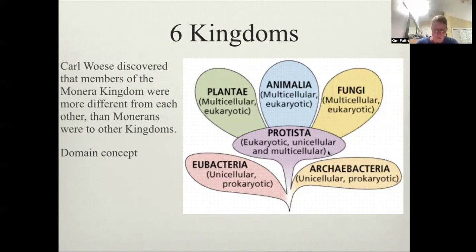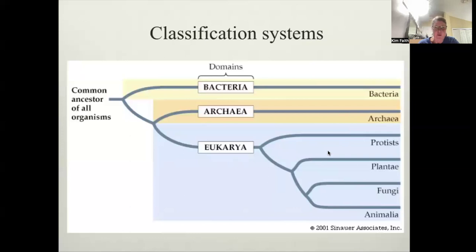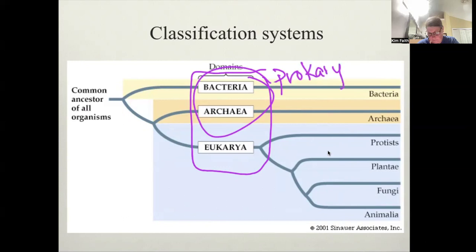And then we decided protista is still a hot mess. So we now have this domain concept. You can see here where we have bacteria, archaea, and eukaryotes. So basically these two are your prokaryotes versus this group, which is the eukaryotes. Cells with membrane-bound organelles. They have a nucleus, they have mitochondria. Some have a chloroplast.